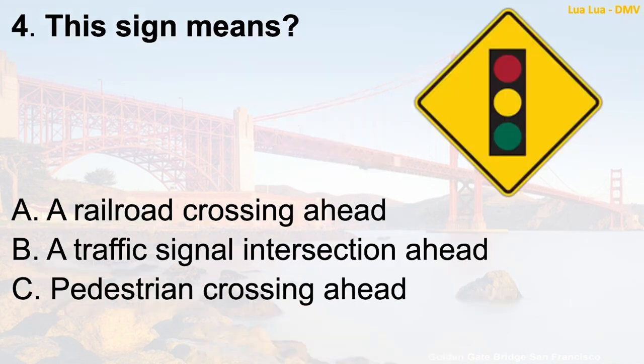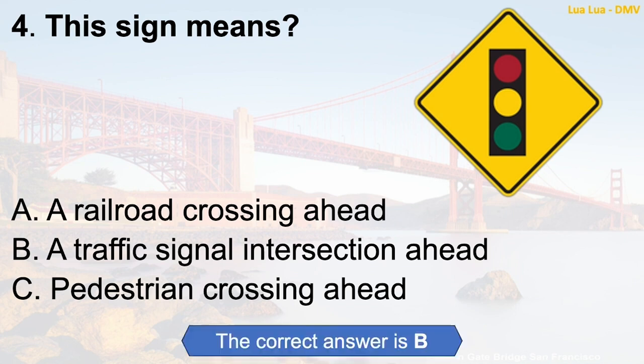Question 4: This sign means — A. A railroad crossing ahead. B. A traffic signal intersection ahead. C. Pedestrian crossing ahead. The correct answer is B: A traffic signal intersection ahead.